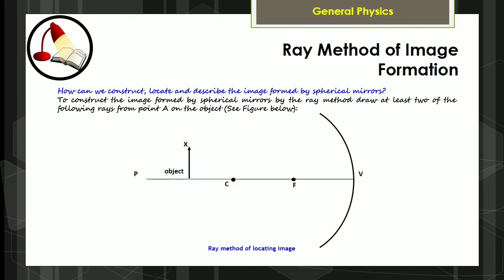Let's review how to construct the ray method of image formation. Ray 1 is drawn parallel to the principal axis.